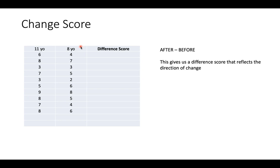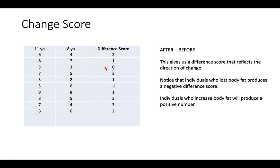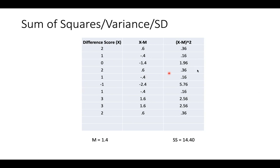Again we set up after minus before — here, after is age 11 and before is age 8. Positive difference scores reflect an increase in liking Pokemon over time, and negative values represent a decrease. We find the mean change score, subtract each score from the mean, square the differences, and sum them to get a sum of squares of 14.40. Press pause to check your math, rounding to two decimal points.